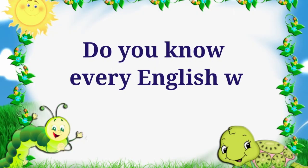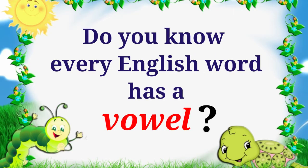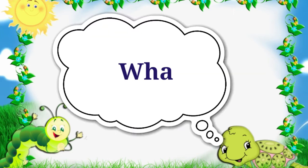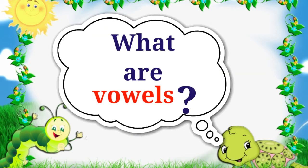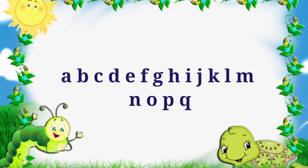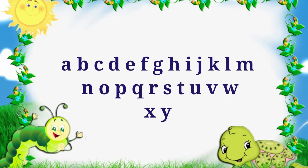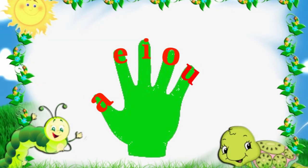Do you know, kids, every English word has a vowel. But what are vowels? In the English alphabet there are many sounds, but five of the sounds are like a family — yes, like a finger family. These sounds are called vowels.